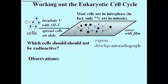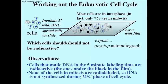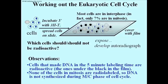If you write down your observations carefully, you will realize that the cells that made DNA — of course they made their DNA in that 5-minute interval during which they were exposed to the tritiated thymidine — those cells are radioactive; they're the ones under the black dots in the film. But none of them were cells in mitosis. That means DNA must not be synthesized during the mitosis and cytokinesis phases of the cell cycle.